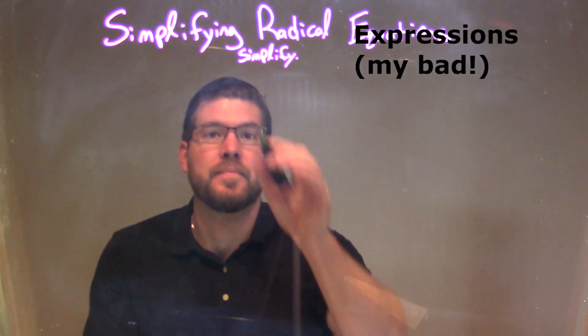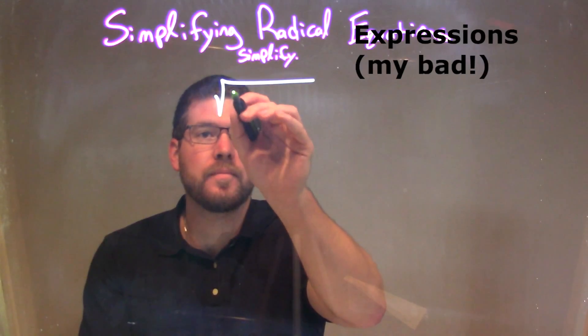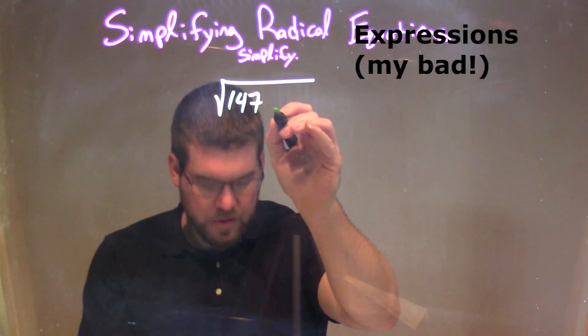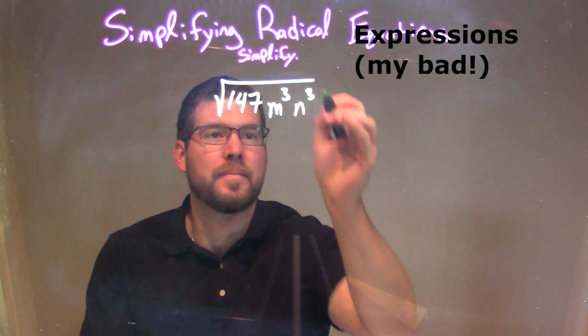So if I was given this problem, the square root of 147 m to the third times n to the third, we need to do a prime factorization here.